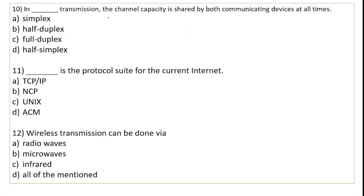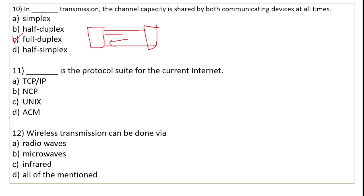In dash transmission, the channel capacity is shared by both communicating devices at all times. Aise transmission mein do devices connected hain ek doosre se aur channel ko all the time share karte hain. Yeh humara full duplex transmission hai, jisme devices data send bhi karte hain aur receive bhi — both devices share the single transmission medium.